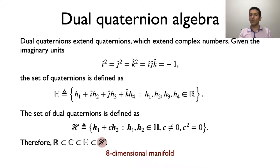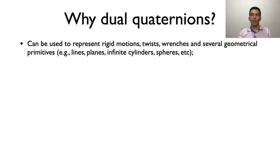The set of dual quaternions, when written in hyper-complex notation, is equipped with the standard addition and multiplication operations, analogously to complex numbers. One needs only to respect the properties of the imaginary units and the dual unit. Dual quaternions can be used to represent rigid motions, twists, wrenches, and several geometrical primitives, such as lines, infinite cylinders, spheres, etc.